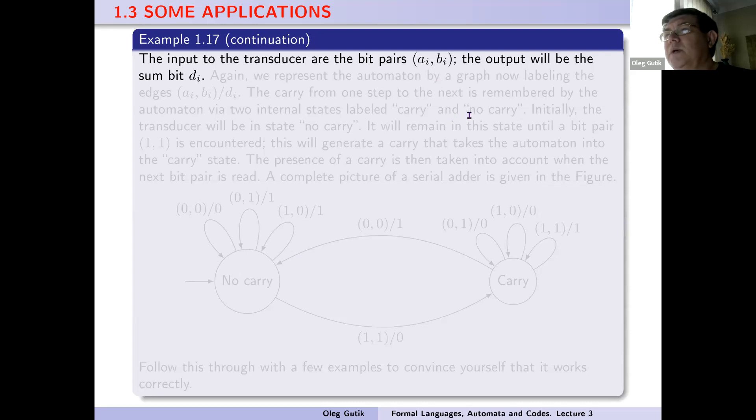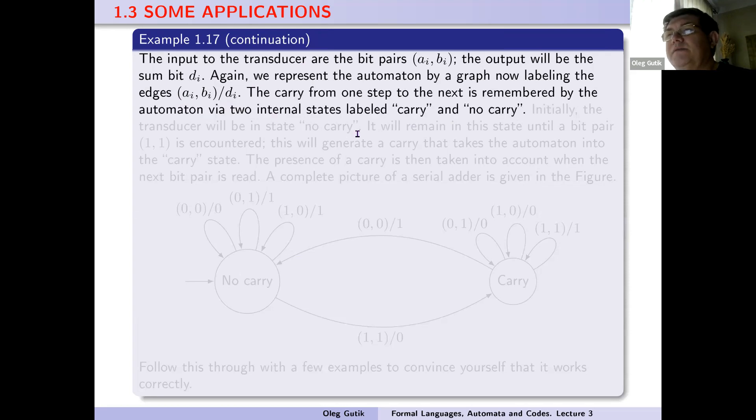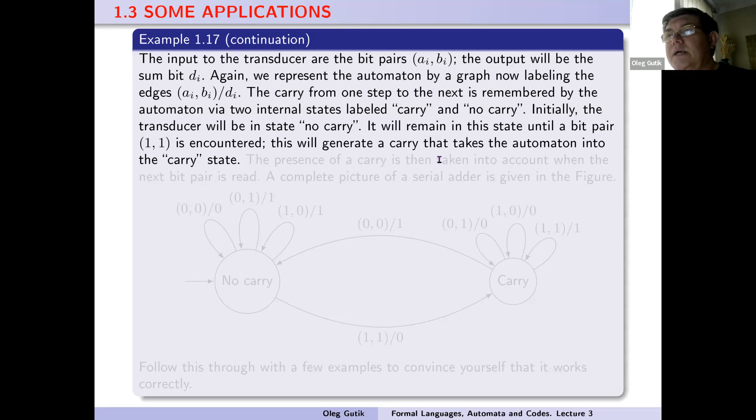The inputs to the transducer are the bit pairs (a_i, b_i). The output will be the sum bit d_i. Again, we represent the automaton by a graph, now labeling the edges a_i, b_i / d_i. The carry from one step to the next is remembered by the automaton. We have two internal states labeled 'carry' and 'no carry'. Initially, the transducer will be in state 'no carry'. It will remain in this state until a bit pair (1, 1) is encountered. This will generate a carry that takes the automaton into the carry state. The presence of a carry is then taken into account when the next bit pair is read.